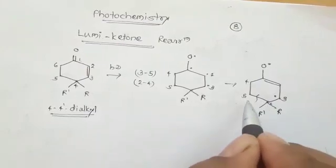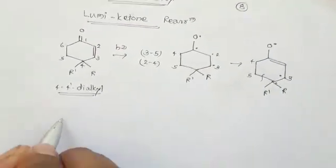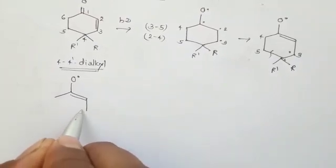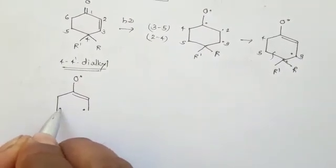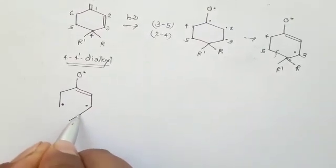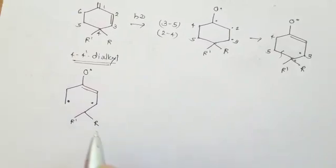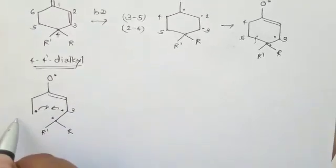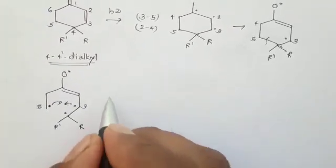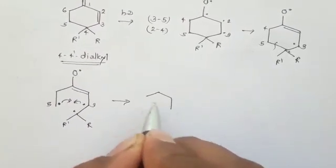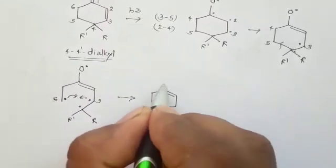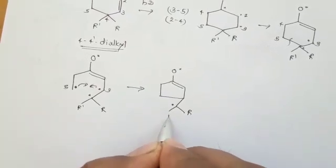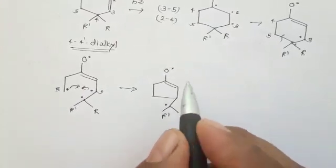Breaking the 4-5 bond gives us an oxygen radical, and then radicals form along the chain. This bond breaks and you find R and R' groups. After that, we make the bond between positions 3 and 5, giving a structure with an oxygen radical, a new 3-5 bond, and the R and R' substituents.